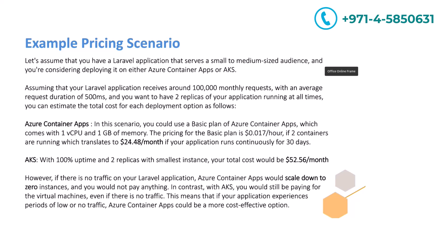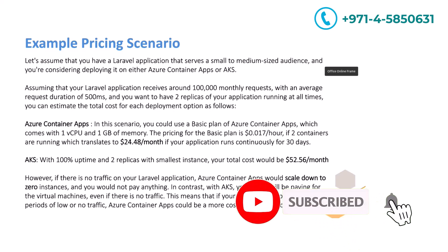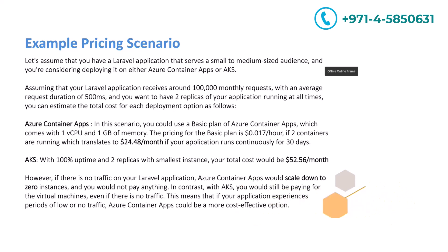Now let's say you have the same containerized application with microservices deployed on Azure Kubernetes Service. For an intermediate-scope application with two replicas on smaller AKS instances, Azure Kubernetes Service provides 100% uptime — meaning your replicas and servers run 24/7. In this imaginary calculated scenario, that would cost $52.56 per month. You can clearly see the price difference: moving your intermediate application from AKS to Container Apps will definitely help you save cost.